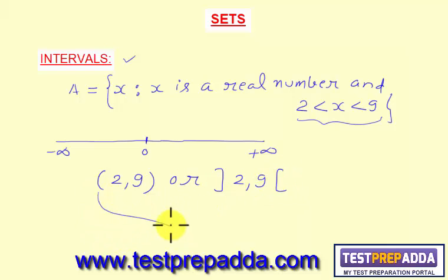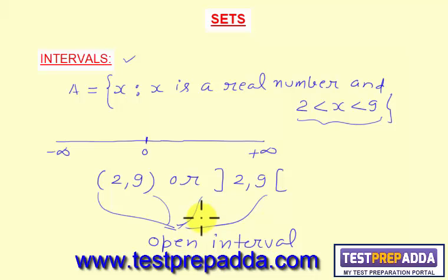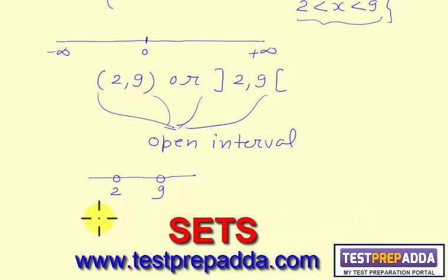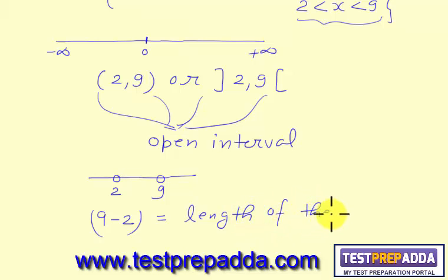These are called open intervals. You can see both sides it is an open interval because both the numbers are not included. This is an alternate way to designate subsets of real numbers — on the continuous line we can write it in this manner. Also, 9 minus 2 is called the length of this interval.